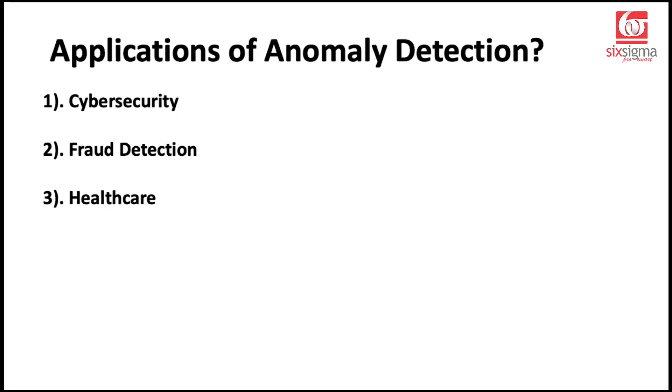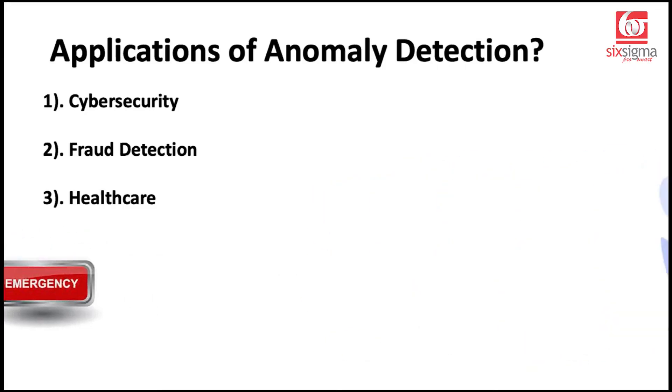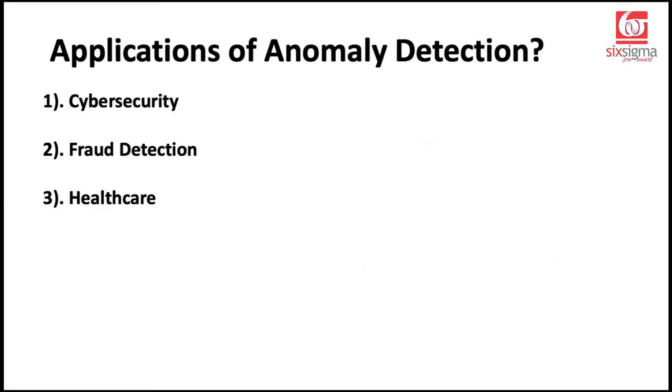And also in the case of healthcare applications, when we talk about a disease outbreak, anomaly detection is used in epidemiology to identify unusual patterns in healthcare data that may indicate the emergence or outbreak of a disease or public health crisis. It could also be used for patient monitoring. Anomalies in patient vital signs or health records can help healthcare providers identify issues early and accordingly plan the right course of action while there is still time to recover the patient's health. So, these are some broad applications of anomaly detection.